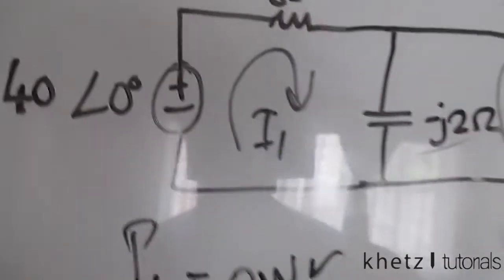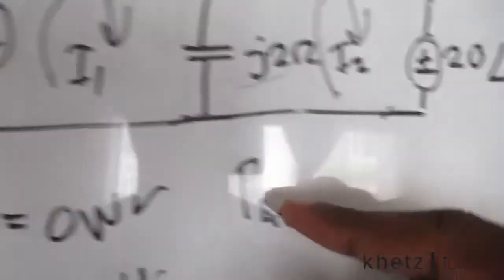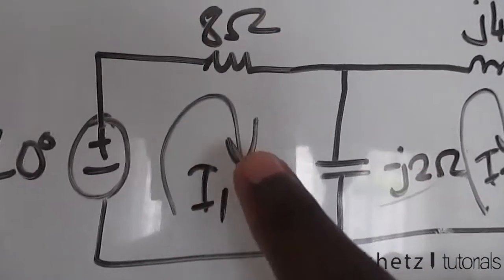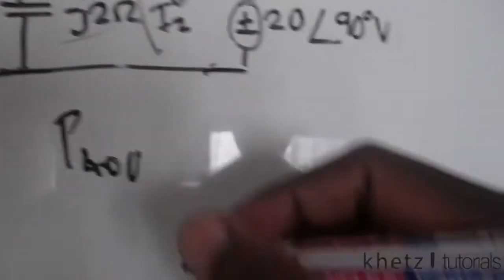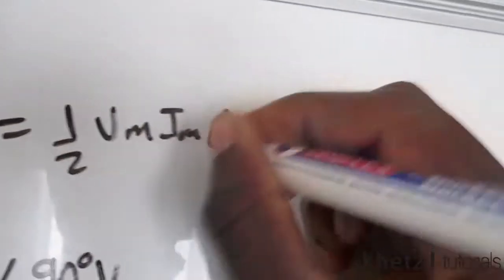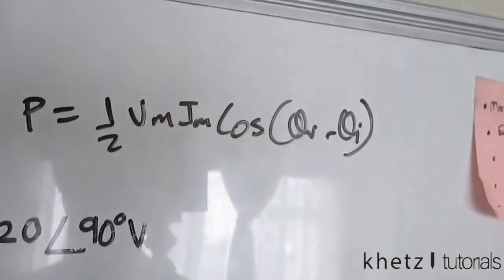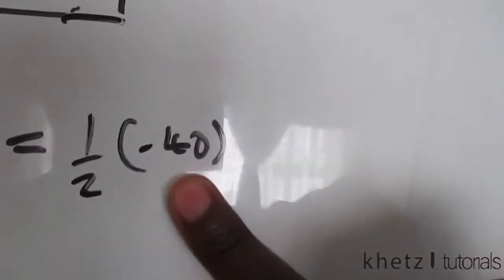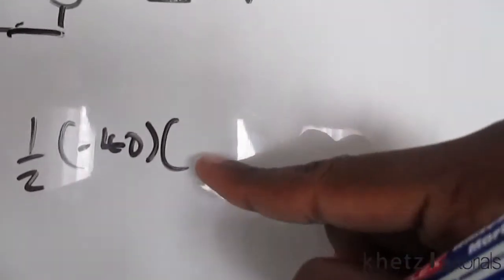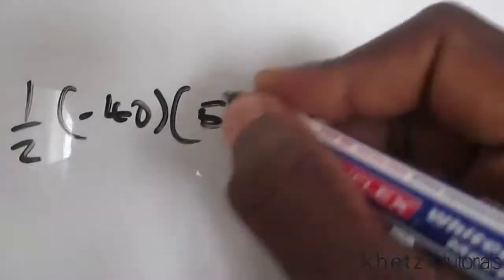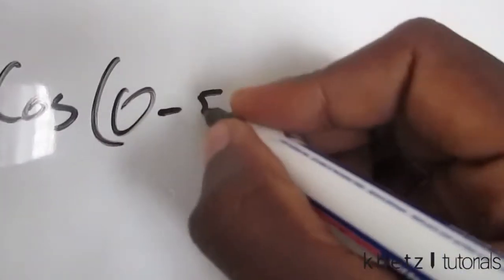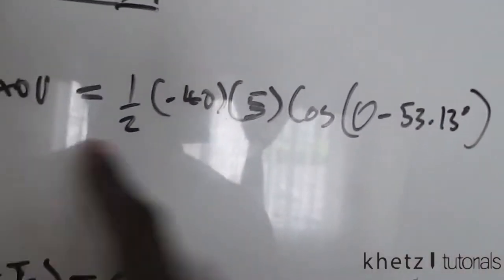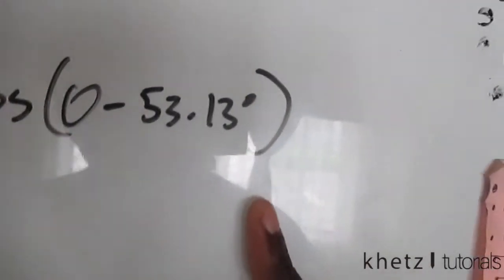Let's start with the 40V voltage source. Using the passive sign convention, i1 enters the negative terminal first, so we use negative 40 for the voltage amplitude. Average power is (1/2)·Vm·Im·cos(θv − θi), so: P = (1/2)·(−40)·5·cos(0° − 53.13°). Putting this into the calculator gives P₄₀ = −60 watts.